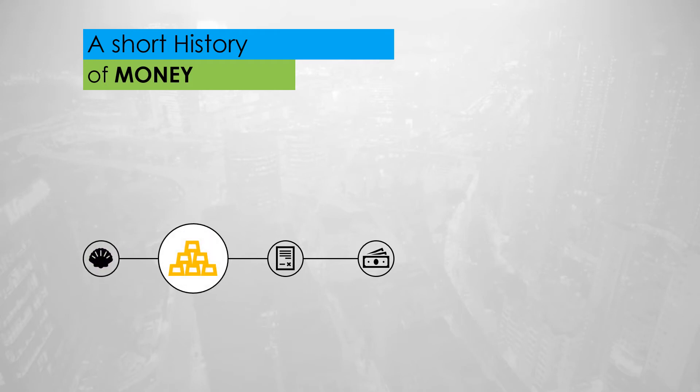Gold was the next major attempt. Gold was durable and it had yet another great property — it is fungible. Fungibility means that one gram of gold has the same properties and value as another gram of gold, which makes gold interchangeable. But there was one issue with gold: it was neither easy to transact nor to safely store in big quantities.